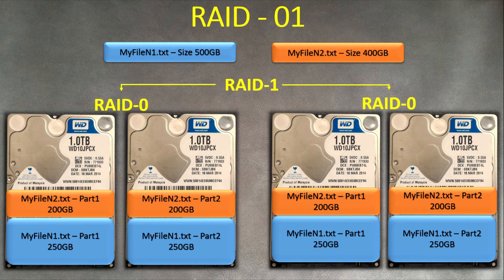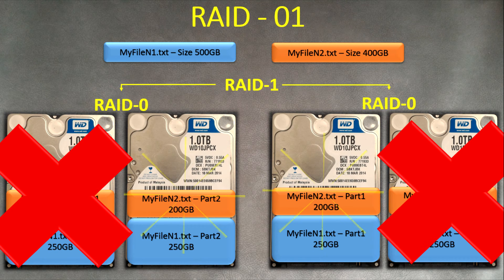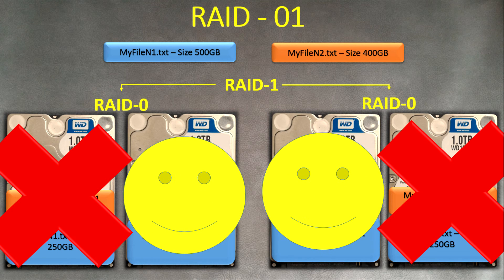RAID 01 and RAID 10 are the most fault-tolerant RAID levels that combine disks, but they are very expensive. If you buy four disks you only get 50 percent of the space — four disks of one terabyte each gives you only two terabytes. So it is expensive to afford.